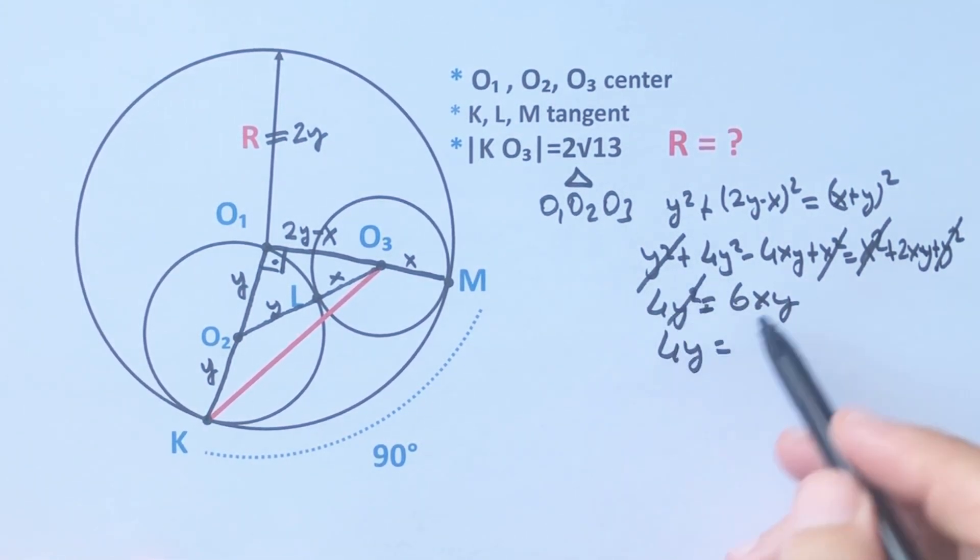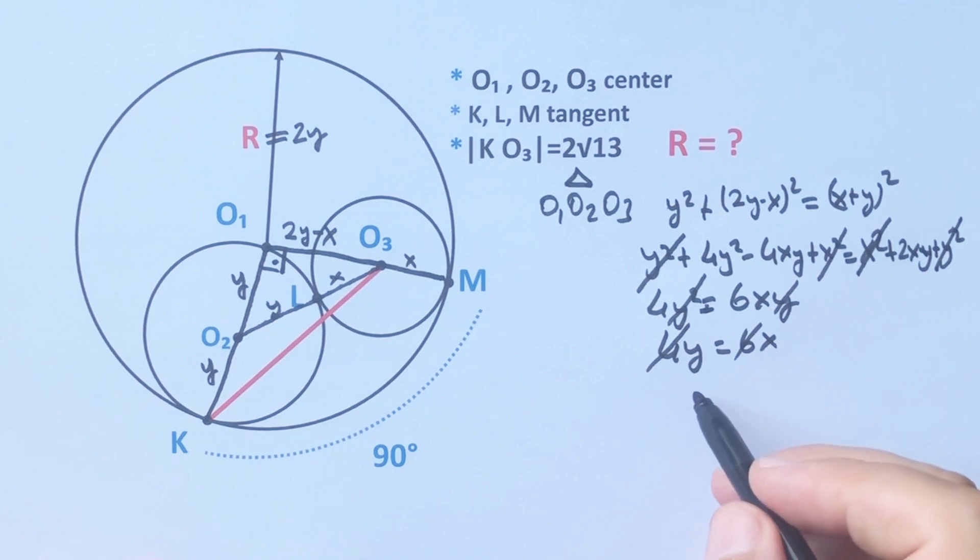Therefore 4y equals 6x, so 2y equals 3x. That means if x equals 2k...